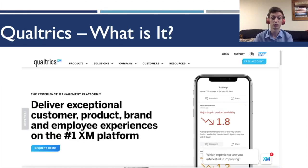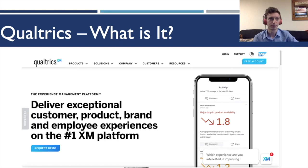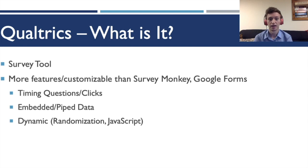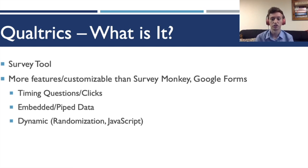At its core, Qualtrics is a survey tool used by a lot of marketing companies, but it's getting more and more popular as a research tool. It's way more powerful than what you might be thinking of a survey tool like SurveyMonkey or Google Forms, because it's much more interactive and dynamic. You can customize just about everything — there's a lot of optionality, and you can even do a little bit of coding, referencing what people said in earlier questions, generating data they can interact with.